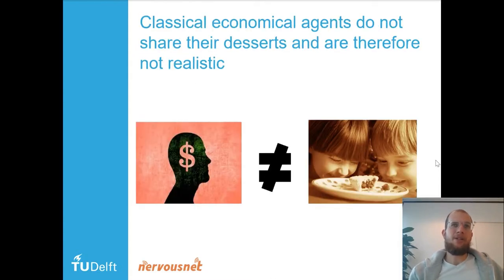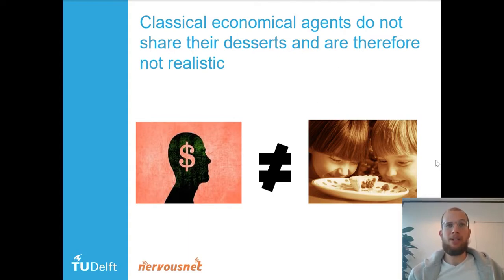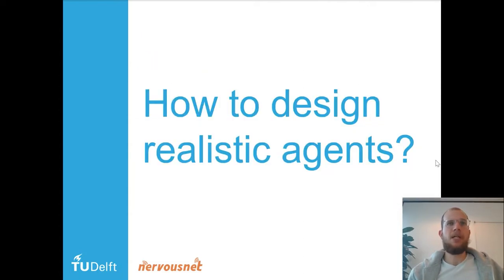Classical economical agents do not share their desserts or money in this experiment and are therefore not realistic — they would keep everything themselves. This raises the question of how to design realistic agents.